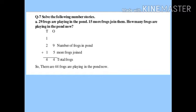Start from the ones place: 9 plus 5 is 14, write 4 and carry 1. Then tens place: 1 plus 2 is 3, plus 1 is 4. Total is 44. Write the final statement: 'There are 44 frogs playing in the pond now.' Form it from the last question in the story.